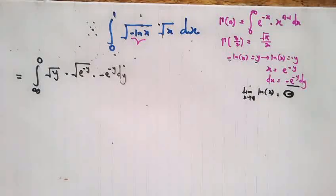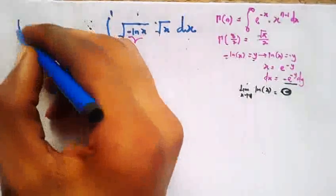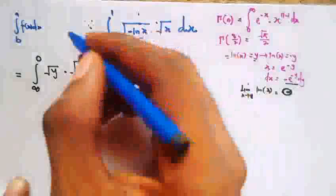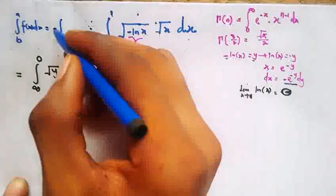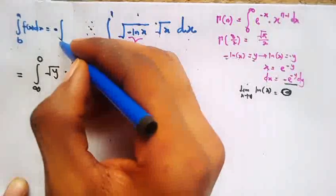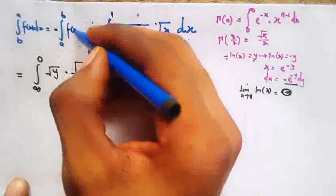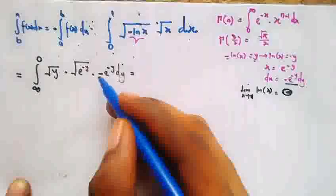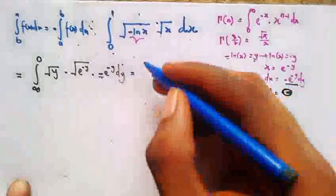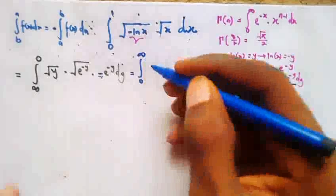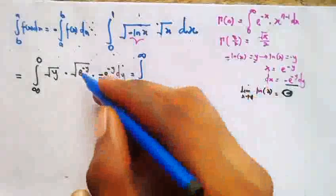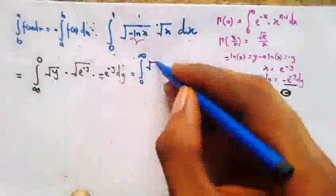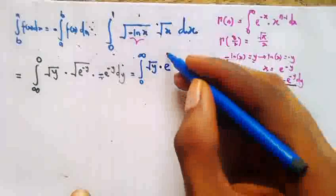We use the theorem that the integral from b to a of f(x) dx equals negative the integral from a to b of f(x) dx. Because of the negative sign in dx, the limits switch, giving us an integral from 0 to infinity.